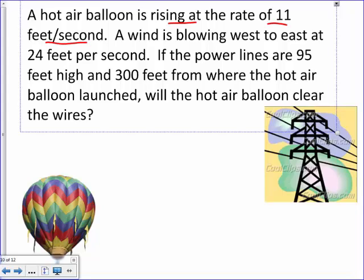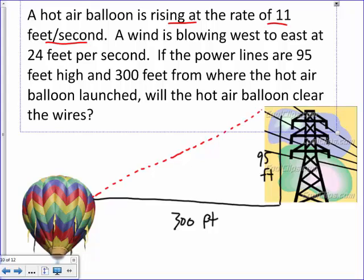So let's imagine the line of this thing. So right now, this hot air balloon is, you know, horizontally 300 feet away. And this power line vertically is 95 feet. And the hot air balloon, it's going to be on a straight line because every time it goes up 11 feet, it's going to go east 24 feet, right? Because each second it goes up 11. So it's really a slope. So it's going to be coming like this. And we're checking to see if it's going to clear those lines or not.